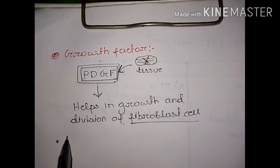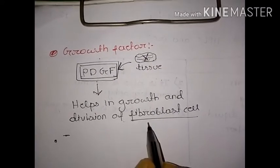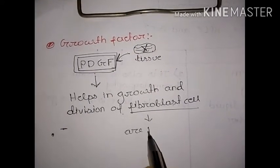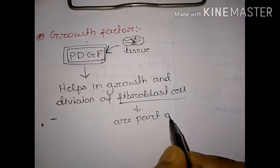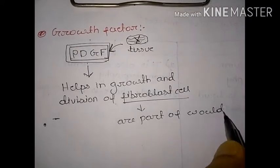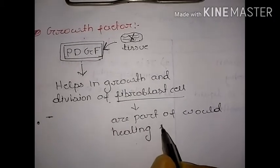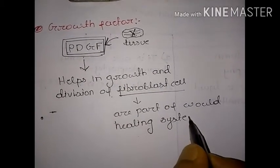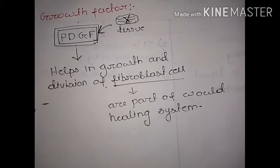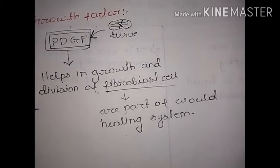The fibroblast cells are part of the wound healing system. There are many types of factors and other proteins also present, which we discuss in animal physiology.